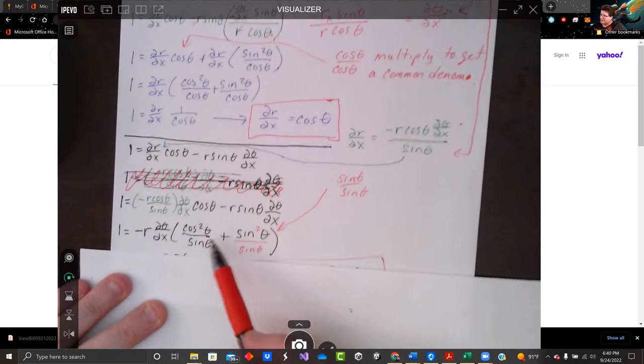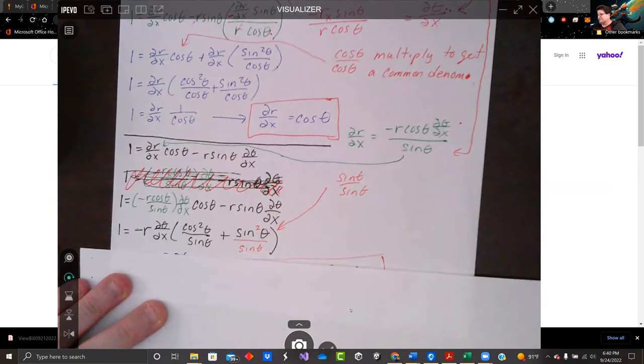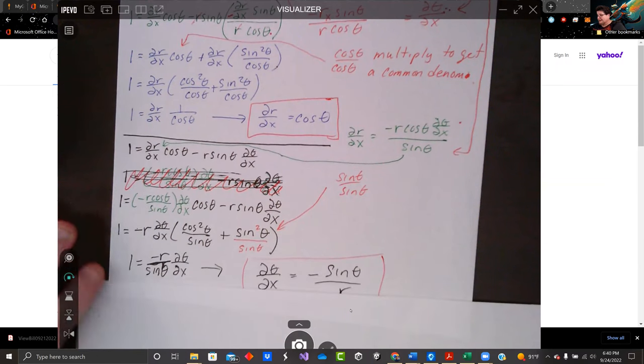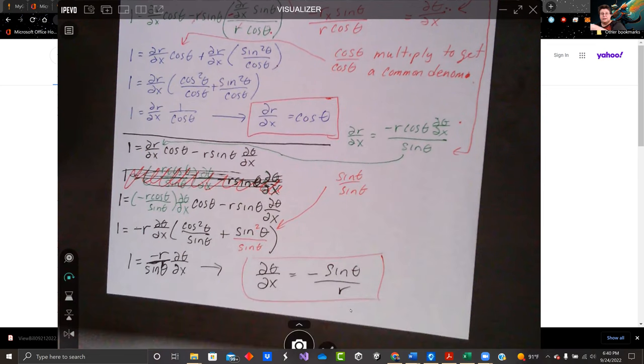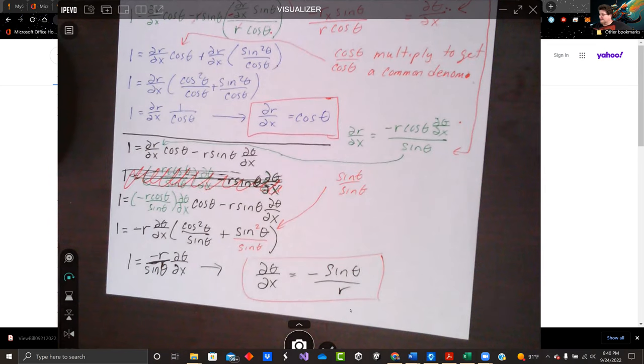And now I've got cosine squared theta over sine theta plus sine squared theta over sine theta. I've got negative r over sine theta times d theta dx equals one. So d theta dx is negative sine theta over r.